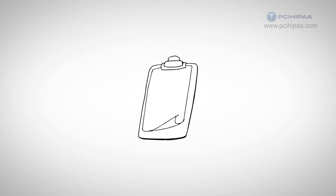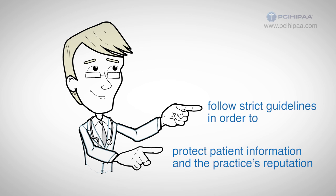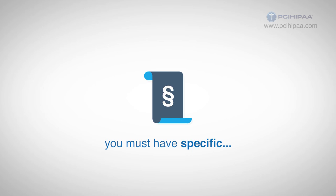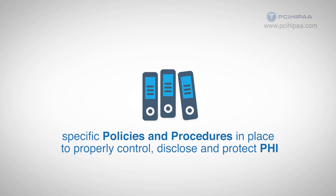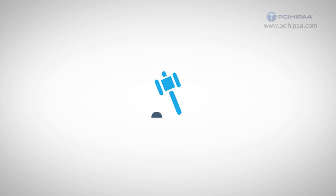The Privacy Rule creates specific standards to protect patient information. Patient privacy continues to evolve and practices must follow strict guidelines in order to protect patient information and the practice's reputation. In order to comply with HIPAA law, you must have specific policies and procedures in place to properly control, disclose, and protect PHI. HIPAA's Privacy Rule defines specific rights for individuals regarding their PHI and obligates covered entities and their business associates to comply with protecting their information.